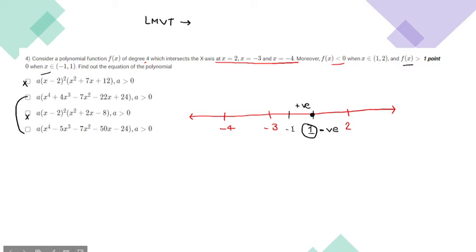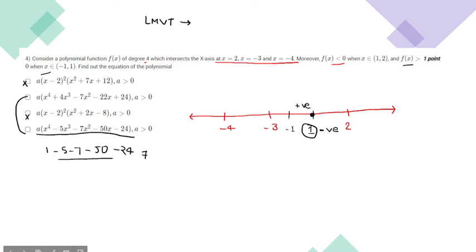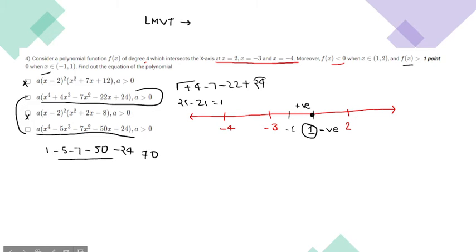Out of the remaining two options, we check which one gives zero when x equals 1 is substituted. The first candidate gives 1 minus 5 minus 7 minus 15 minus 24, which is not zero. The second candidate gives 1 plus 4 minus 7 minus 22 plus 24, which equals 0. So option 2 is the correct answer for question 4.